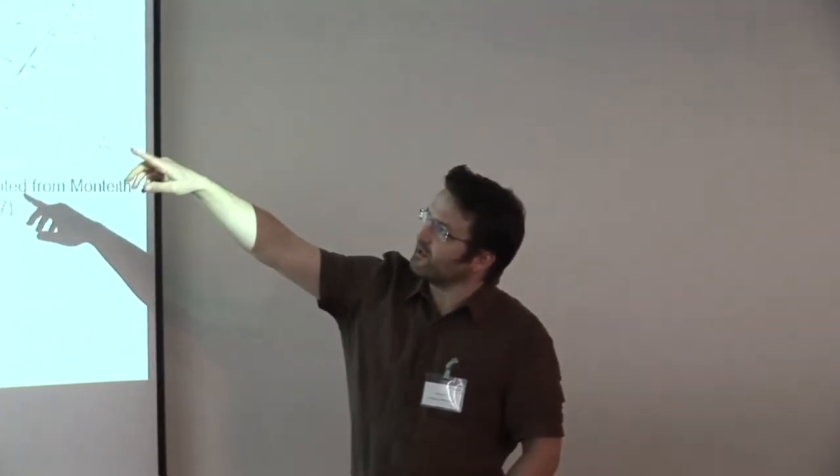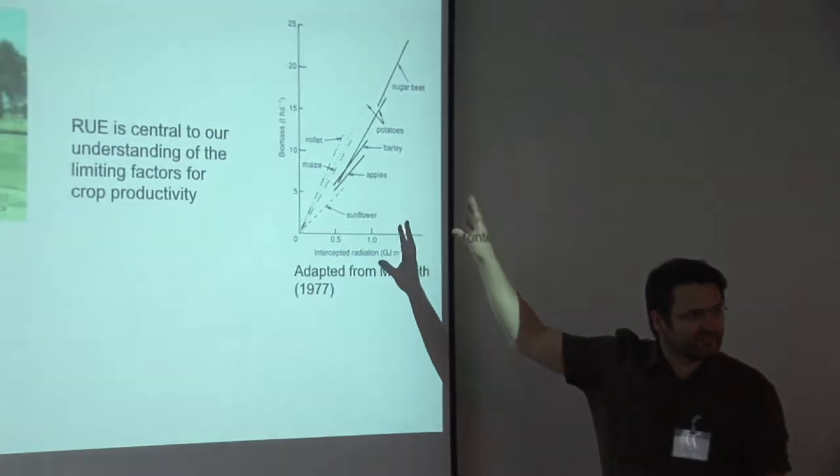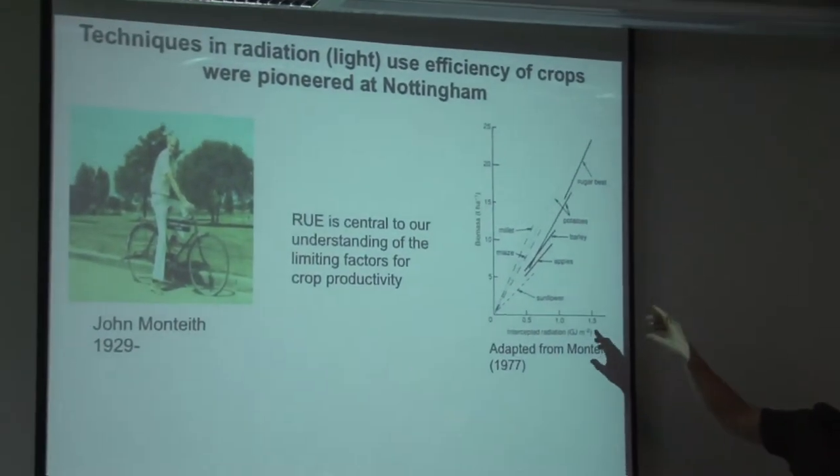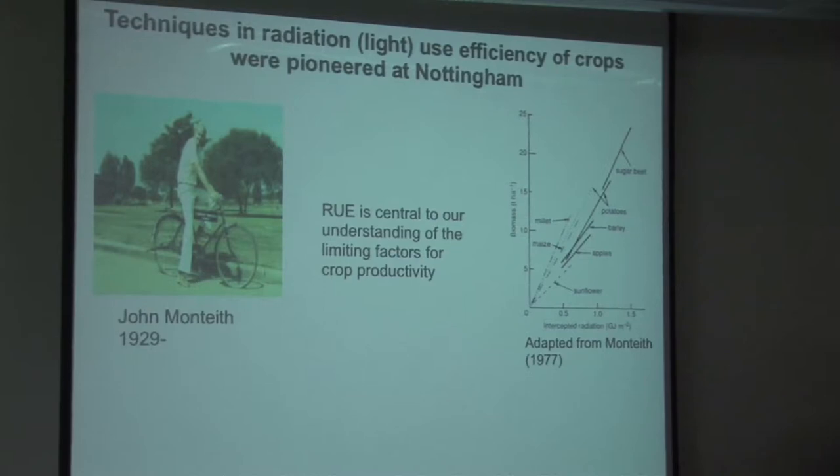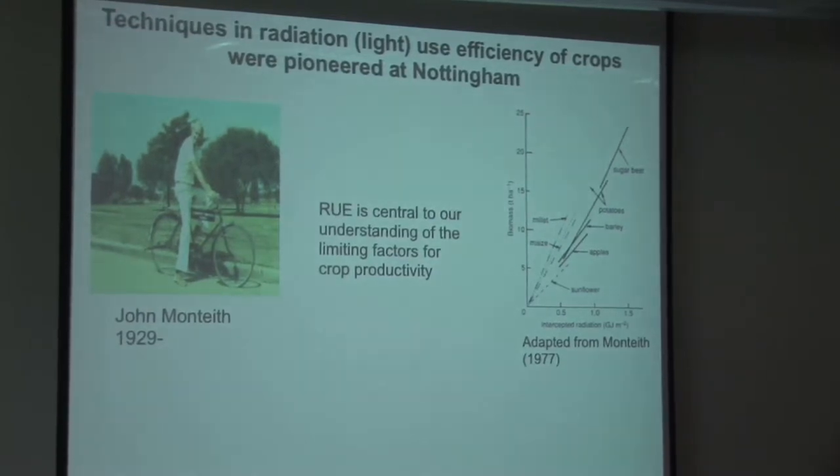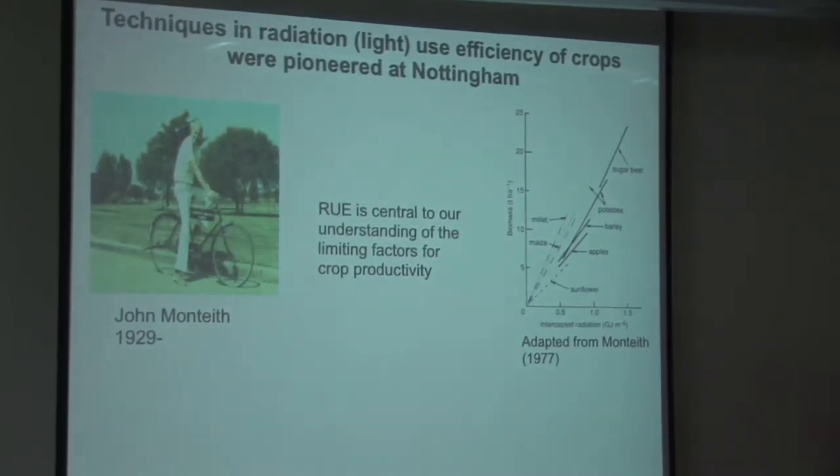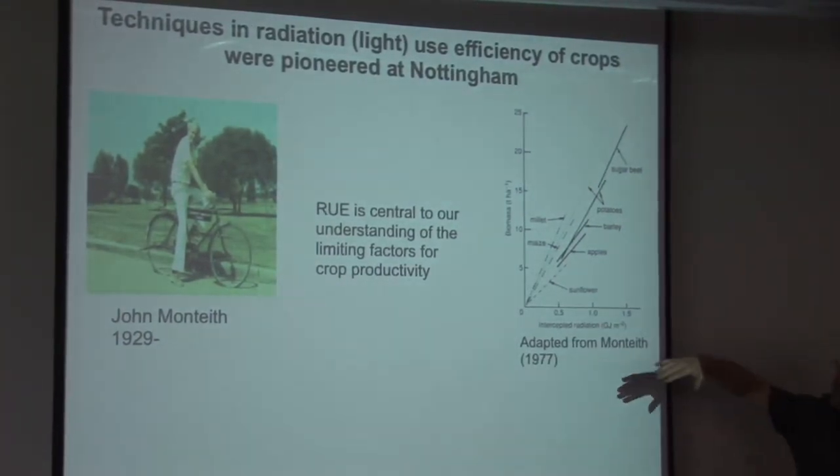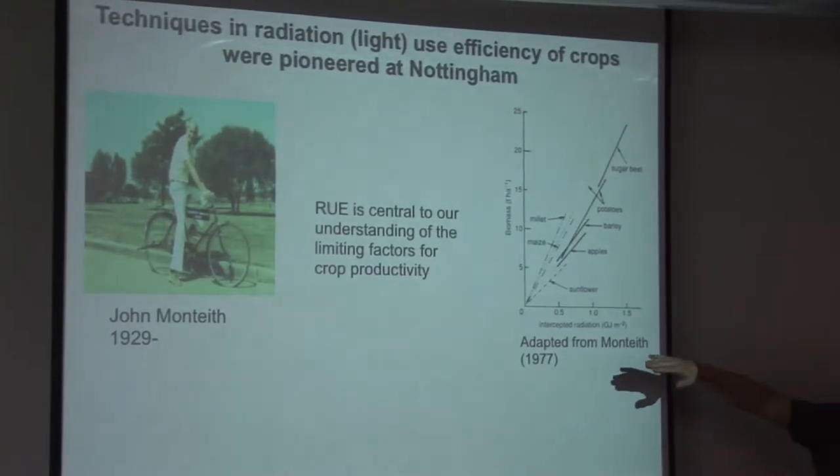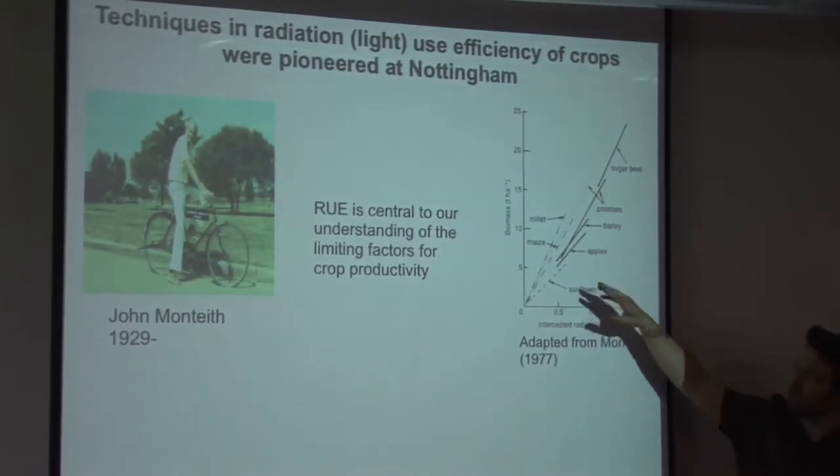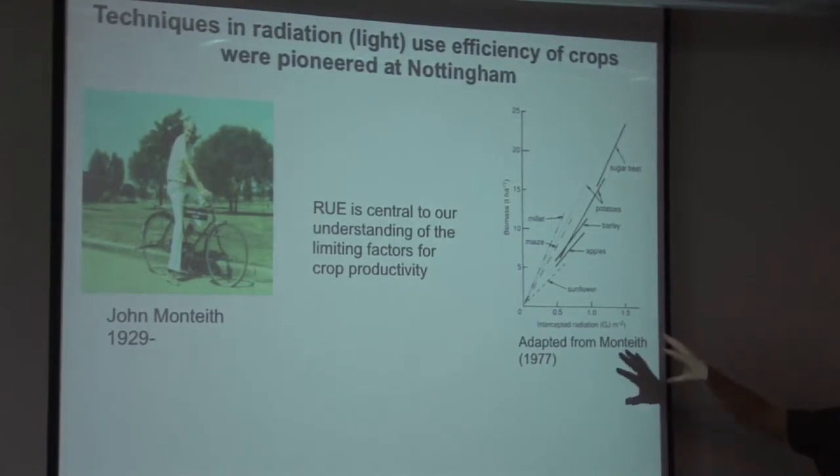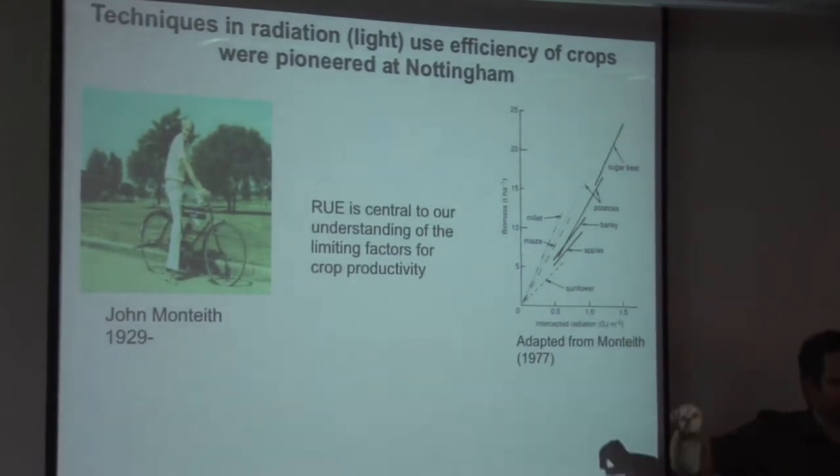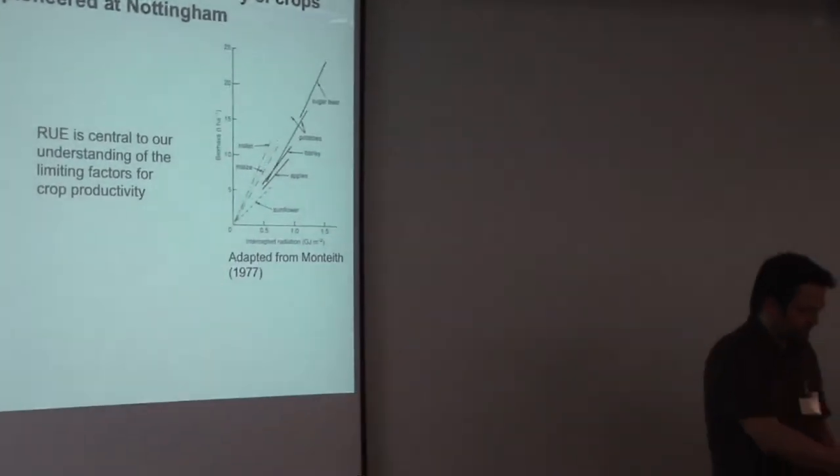I have to mention, particularly with Nils here, that the techniques in radiation use efficiency, many of these techniques were actually pioneered at Nottingham. So the measurements that were used to measure radiation use efficiency, people will refer back to a chap called John Monteith, and he helped establish this relationship between intercepted radiation and biomass. And what he did, along with others, is actually central to our understanding of how productivity works.